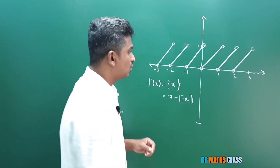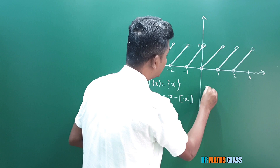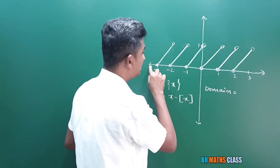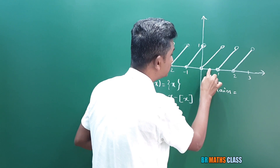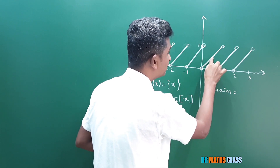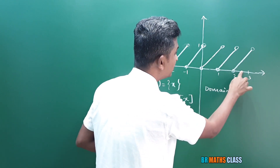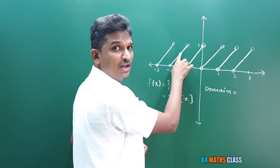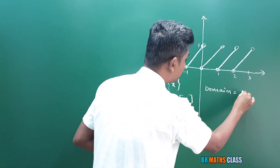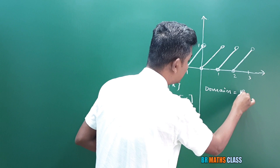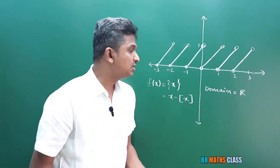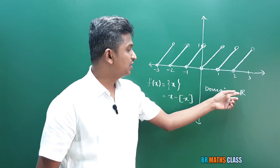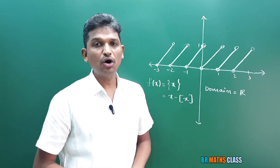What is the domain? Is this function defined for all real numbers? Yes, it is defined for all real numbers. You take 0.5 — a corresponding y value is there. You take 2.5 — a corresponding value is there. You take minus 1.5 — a corresponding value will be there. So, domain of this function is all real numbers. You take any real number; the corresponding value can be calculated.